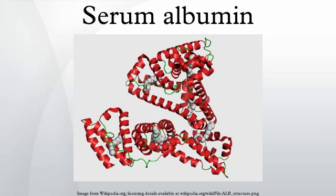Serum albumin is produced by the liver, occurs dissolved in blood plasma, and is the most abundant blood protein in mammals. Albumin is essential for maintaining the oncotic pressure needed for proper distribution of body fluids between blood vessels and body tissues. Without albumin, the high pressure in the blood vessels would force more fluids out into the tissues. It also acts as a plasma carrier by nonspecifically binding several hydrophobic steroid hormones and as a transport protein for hemine and fatty acids.